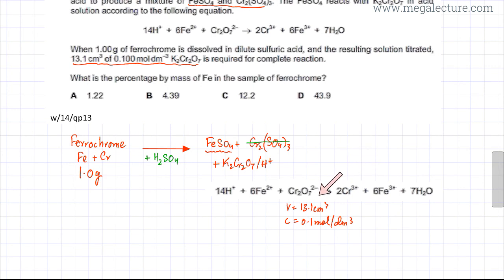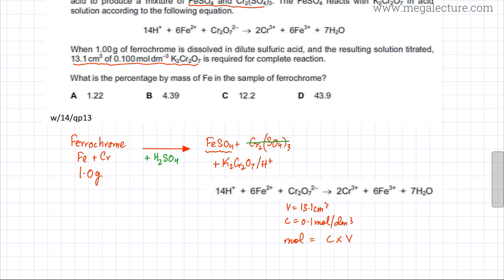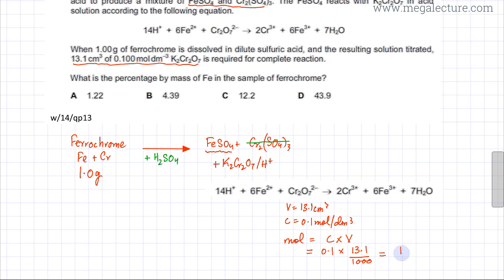Starting by finding the moles of dichromate(VI) ions, since we are given the volume and concentration, using moles = concentration × volume. The concentration is 0.1 mol dm⁻³ and the volume is 13.1 cm³ divided by 1000 to convert to dm³. This gives 1.31 × 10⁻³ moles of dichromate(VI) ions.